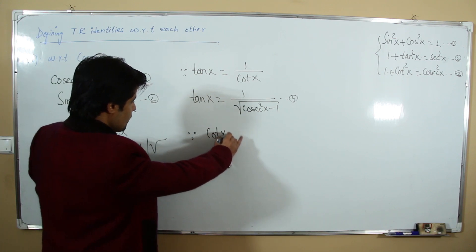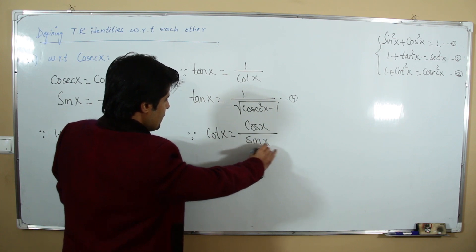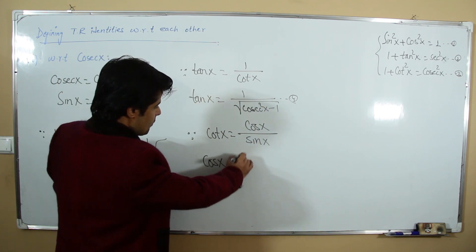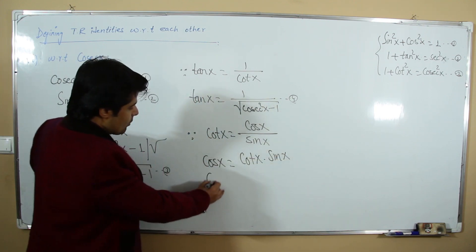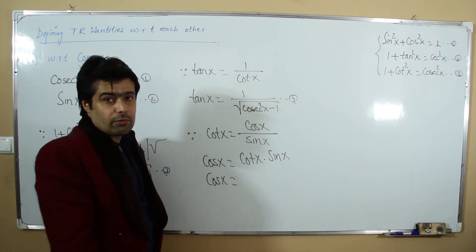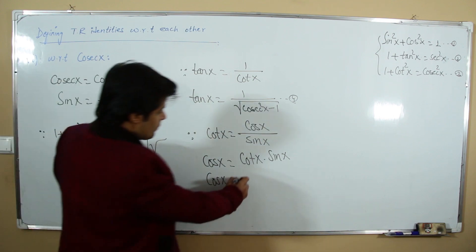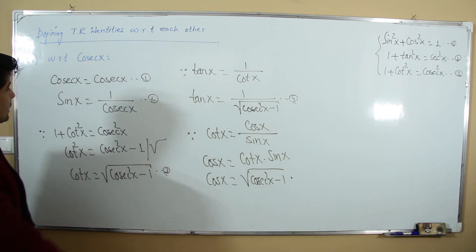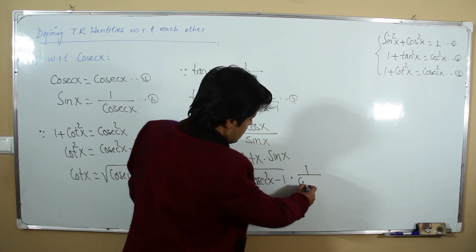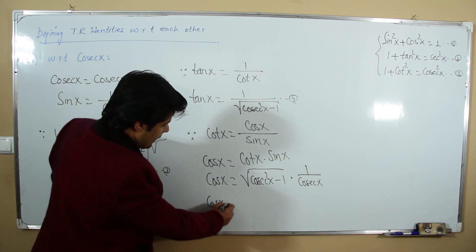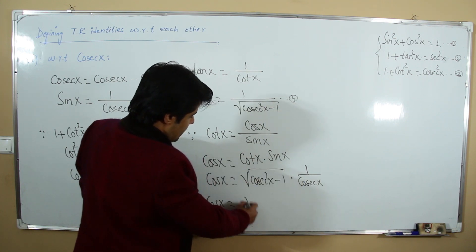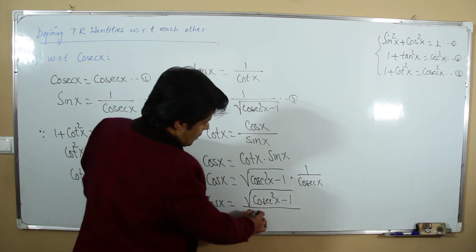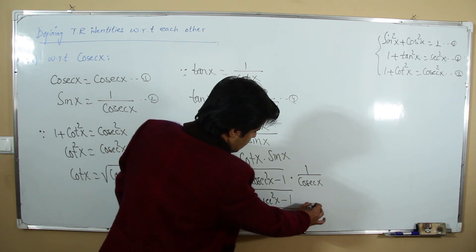From cot x = cos x / sin x, by cross-multiplication: cos x = cot x · sin x. Substituting cot x = √(csc²x - 1) and sin x = 1/csc x: cos x = √(csc²x - 1) / csc x. This is our fifth relation.